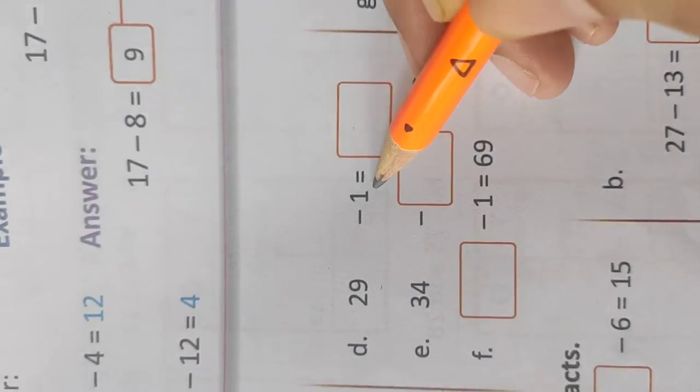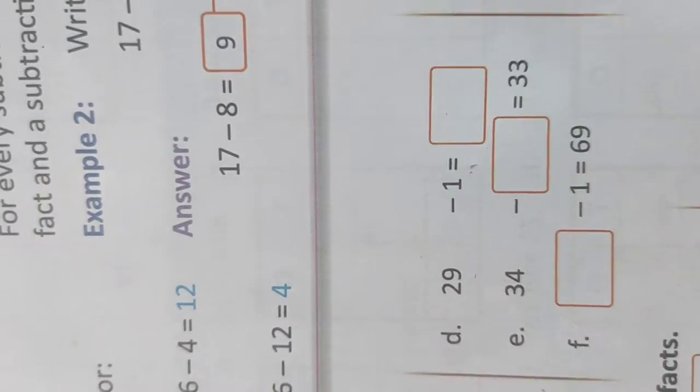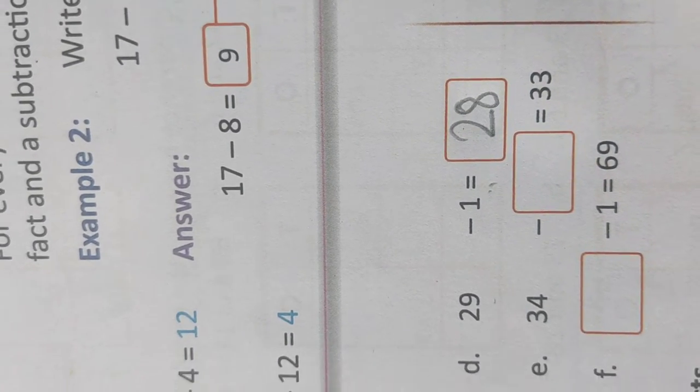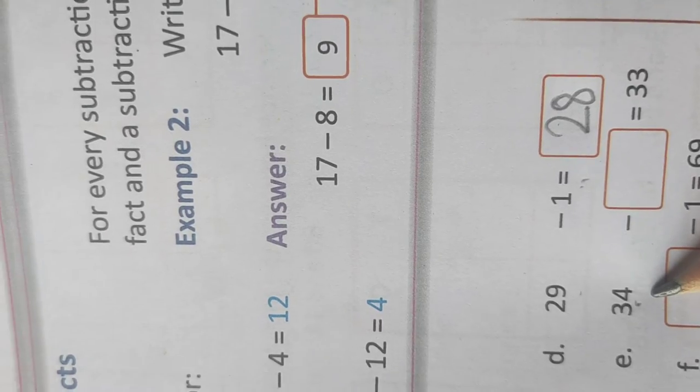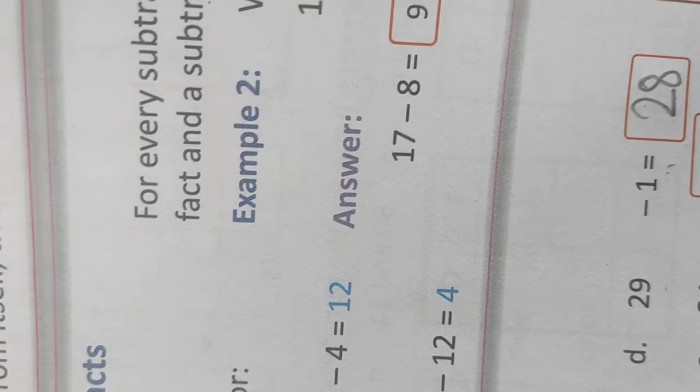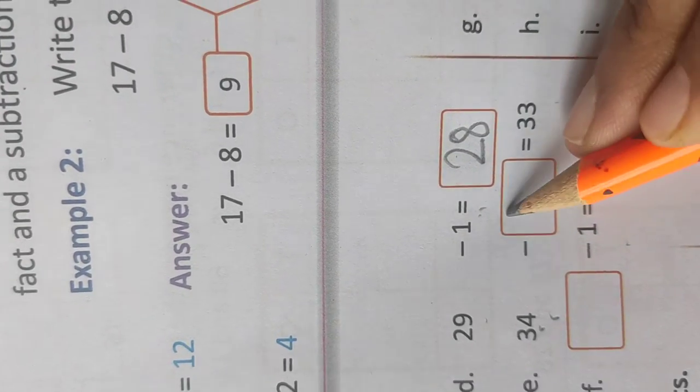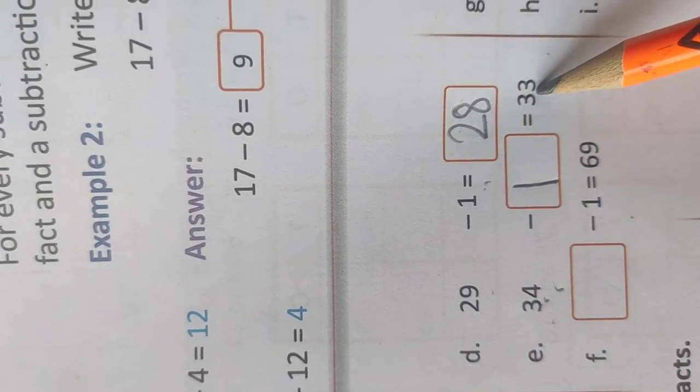Now, 29 minus 1. Whenever we write minus 1, it means we are writing the predecessor of the given number. So it should be 28. Similarly, if we subtract anything from 34, we are getting 33. That means if I am writing the predecessor of the given number, what should be subtracted from it? It should be 1 always.